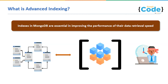Before jumping into how exactly advanced indexing works on array fields, let us understand why we need advanced indexing in addition to the normal indexing that we do in MongoDB. For that, let us jump into MongoDB Compass for explanation.